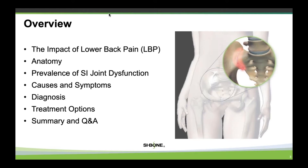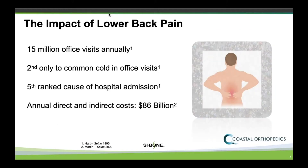So we're going to start with a brief overview. We're going to talk a little bit about the impact of lower back pain, then go over the anatomy of the SI joint, the prevalence of SI joint dysfunction, the causes of SI joint pain, and what the symptoms of SI joint pain are. Then we'll go over how we come about the diagnosis, some treatment options, and then we'll leave a little time at the end to summarize everything and have a question and answer session.